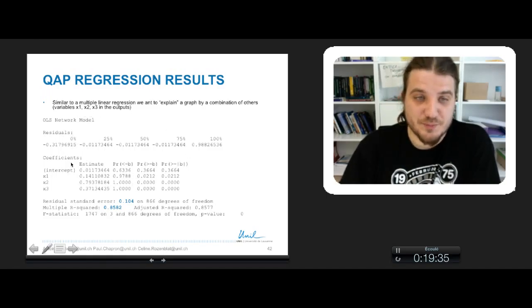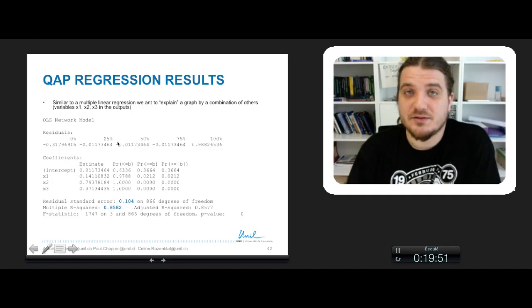It's a little bit different than for a correlation, but you still have the same kind of information. So this is the residuals of your regression, the error that you commit by trying to estimate your network by a model.